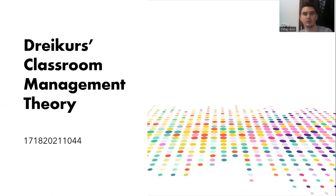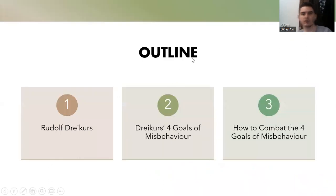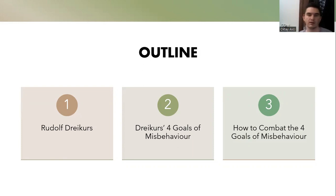In this presentation, we're going to be talking about who Dreikurs is, what his theory is, and how we can use this theory. What we're going to cover first is who Rudolf Dreikurs is, what made him famous, and what his actual theory is. After that, we're going to talk about the four goals of misbehaviour from Rudolf Dreikurs, and then how we can combat these four goals.